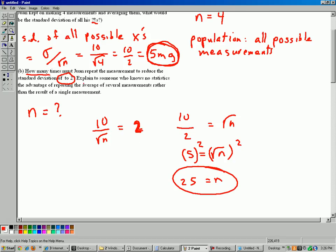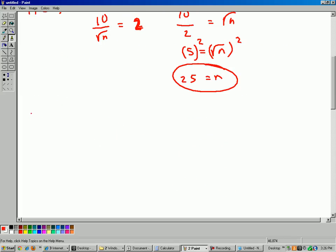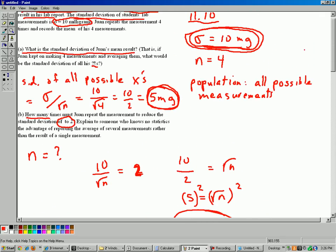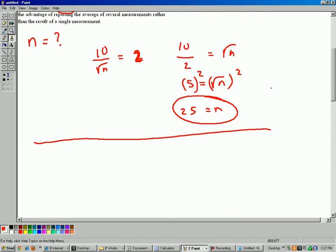Okay, last part of the question. Explain to someone who knows no statistics the advantage of reporting the average of several measurements rather than the result of just one single measurement. Well, the idea here, if you think of standard deviation as how reliable your measurements are, one measurement, standard deviation is 10. Four measurements, standard deviation is 5. 25 measurements, standard deviation is 2. We just figured that out.